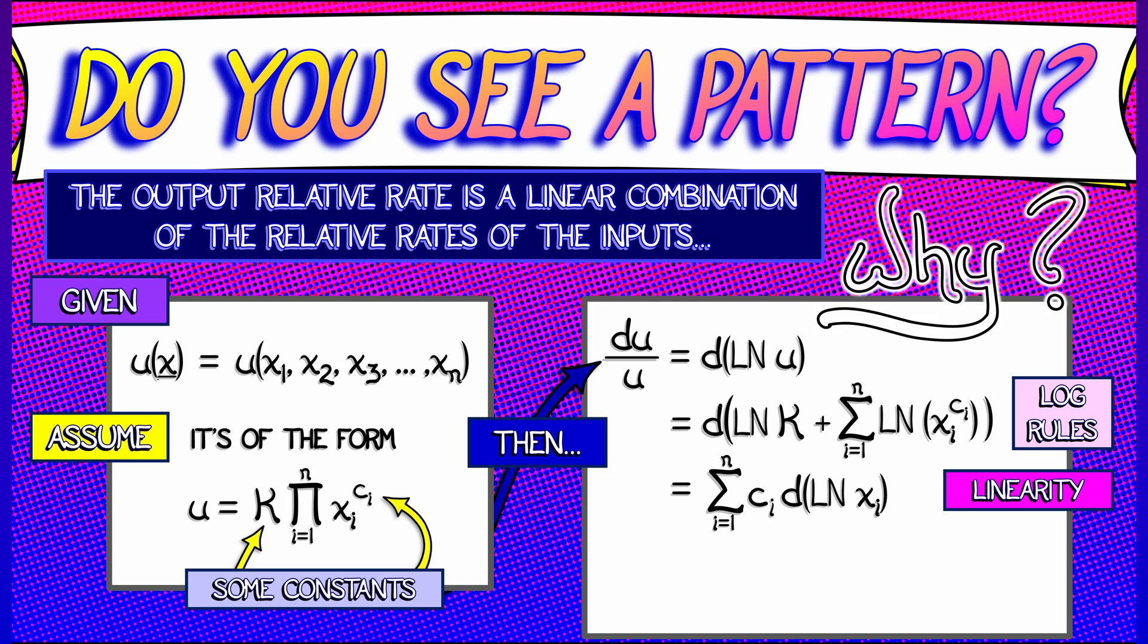What's the derivative of the sum of the logs of xi's to various powers? I pull the powers, c sub i, out in front. And now I have the sum of c sub i's times the derivatives of the logs of the xi's. But those are the relative rates of change by definition. I get the sum, i goes from one to n, of ci times dxi over xi.